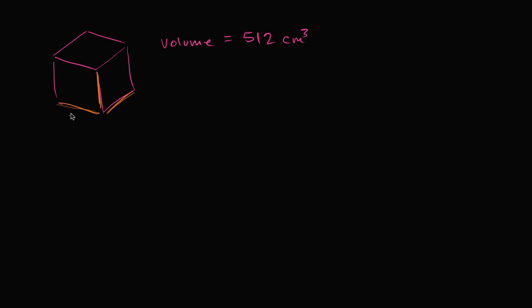Let's call this length x. If that's x, then this is going to be x, and then this is x as well. So if the volume is 512 cubic centimeters, that means that x times x times x is going to be equal to 512.